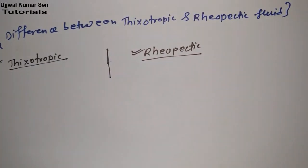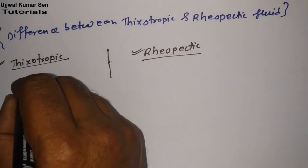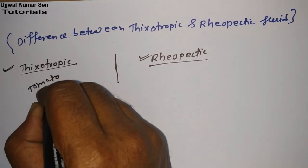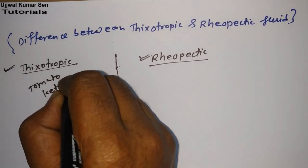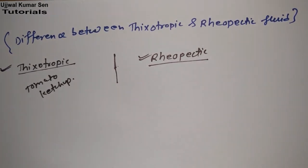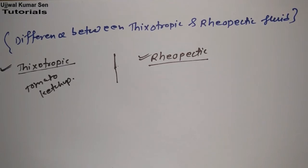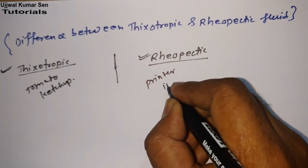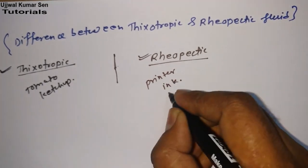Let me share with you the examples, because examples really help you understand. The example of thixotropic fluid is tomato ketchup. Now, the example of rheopathic fluid is printer ink.